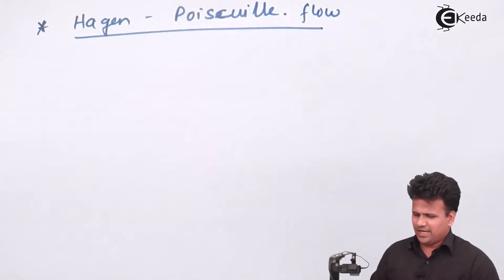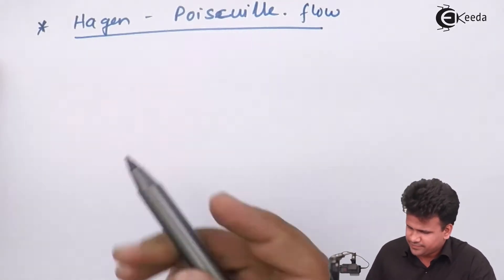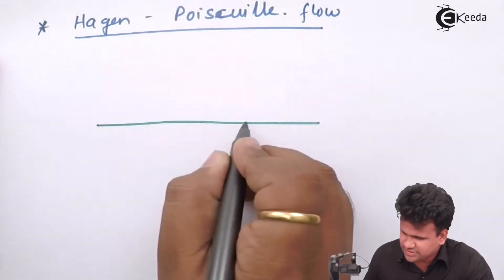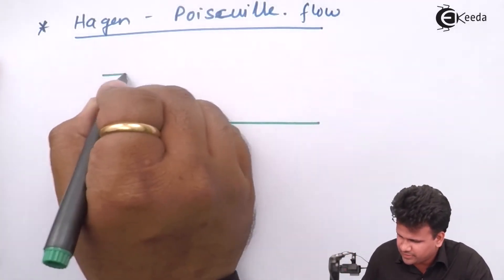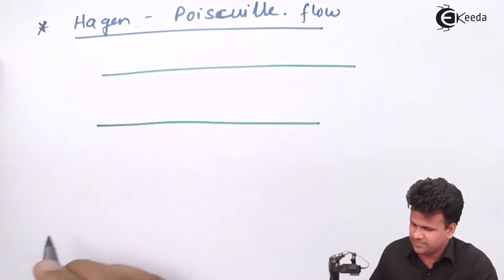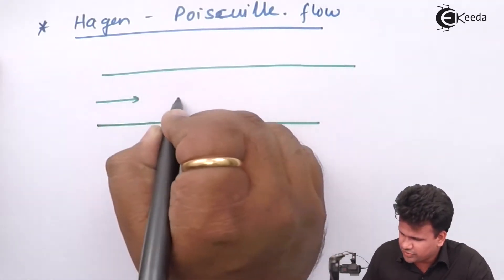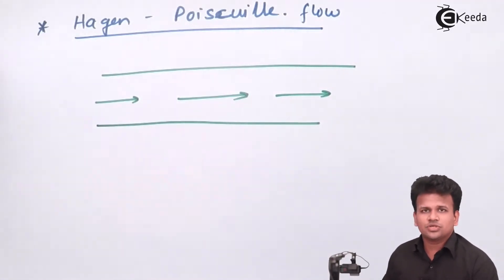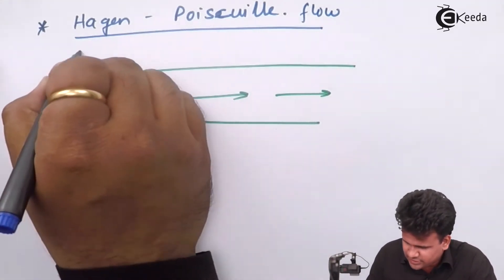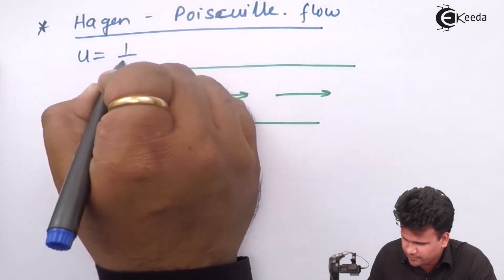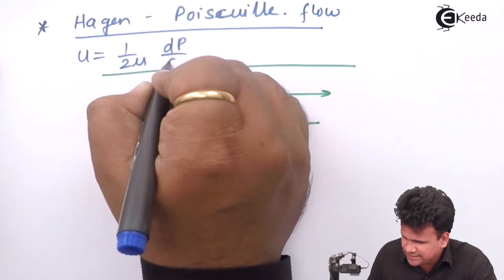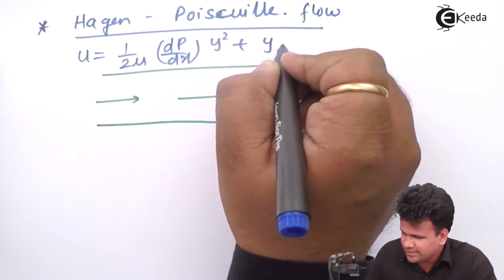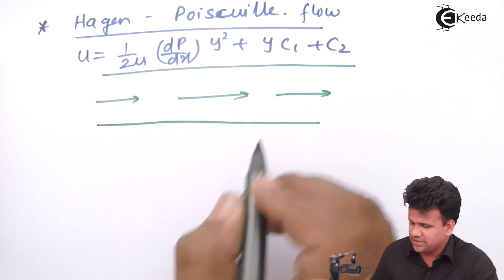In this, what we have to know is that there is a fluid flow through a pipe. This is the bottom surface of the pipe, this will be the top surface of the pipe, and the fluid is flowing through the pipe. Now we already know the solution of the Navier-Stokes equation: u is equal to 1 upon 2μ · dp/dx · y² + c1·y + c2.